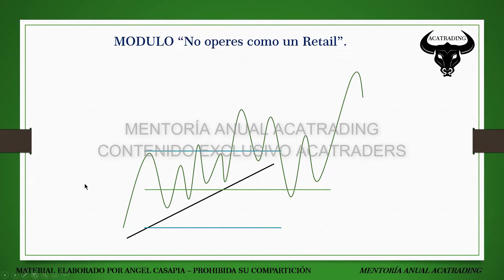En lecciones anteriores tienen la interpretación de qué pasa cuando el precio neutraliza máximos o mínimos con mecha o con cuerpo. El algoritmo de entrega de precio interbancario, a través de la manipulación transaccional del market maker, ingenia liquidez y genera eficiencia dentro del price action, creando estos máximos relativamente iguales conocidos como dobles techos, dobles suelos, equal highs, equal lows.